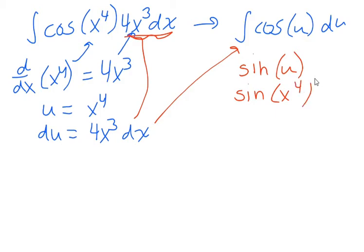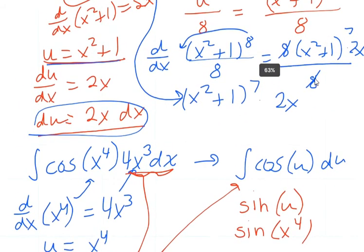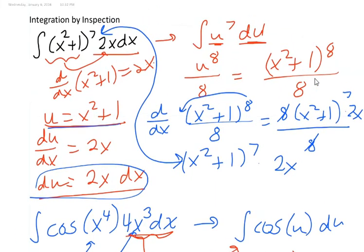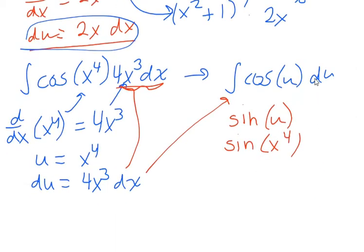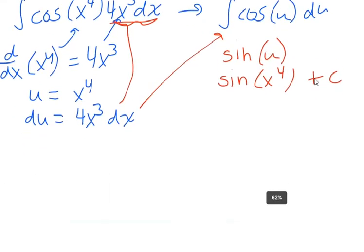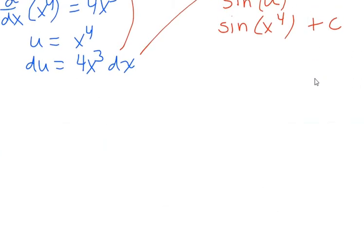And I think I forgot to mention that I should have added a plus c on this one up here. Yeah, I should add a plus c on that because there could have been some constants hanging out. So my answer should have a plus c. Sorry about that. People who do calculus would probably be yelling at me right now. So sine of x to the fourth plus c would be my answer.